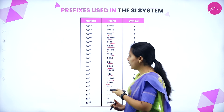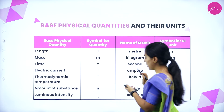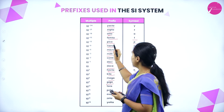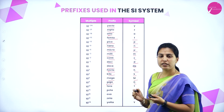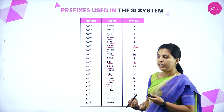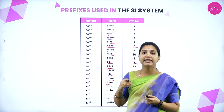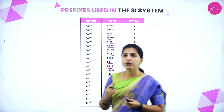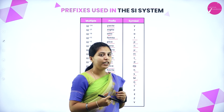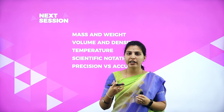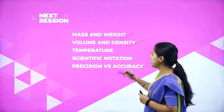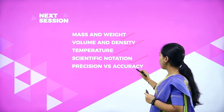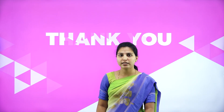Before the SI unit, you add a prefix. For example, taking pico as a prefix for meter gives picometer. Taking milli as a prefix for meter gives millimeter, which equals 10⁻³ in length. This is how prefixes are used for the SI system. In the next session, we will discuss mass and weight, volume and density, temperature, scientific notation, and precision versus accuracy. Thank you so much — I hope you have completely understood today's session. We will meet in the next session.